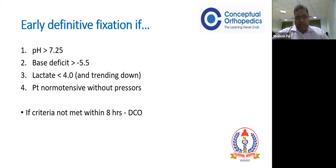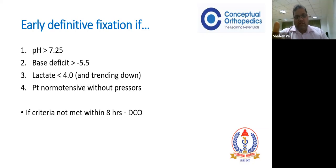Early total care should be done if and only if: pH is more than 7.25, base deficit is more than minus 5.5, lactate is less than 4 and trending down (meaning shock is improving - lactate coming down is a good sign), and the patient is normotensive without the use of any pressors. All four criteria need to be met. These can be assessed within eight hours of injury - we don't need to immediately label a patient as unstable. If physiological parameters improve within eight hours, we can do early total care; otherwise, we do damage control orthopedics.